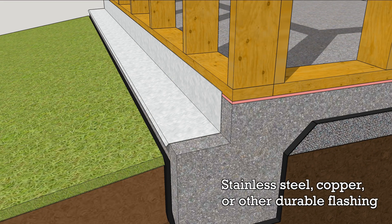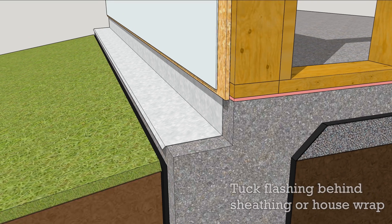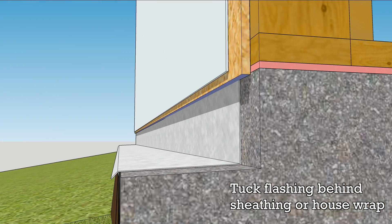Install a drip edge flashing, preferably stainless steel or copper. It's best to tuck it behind the wall sheathing if possible, but it should at least be wrapped under the house wrap.